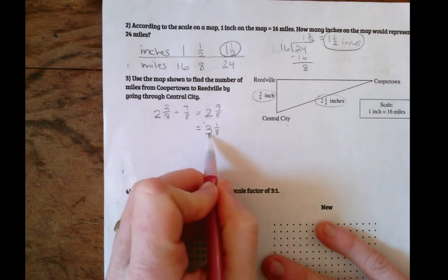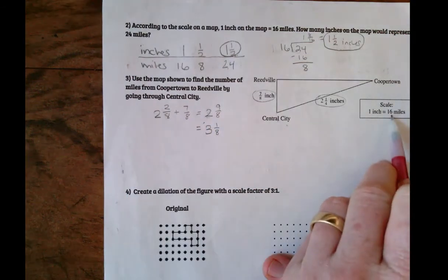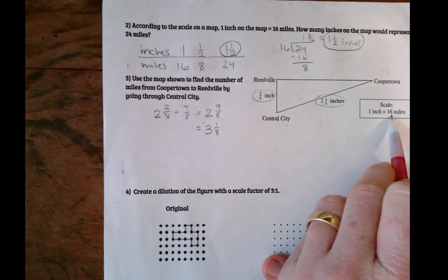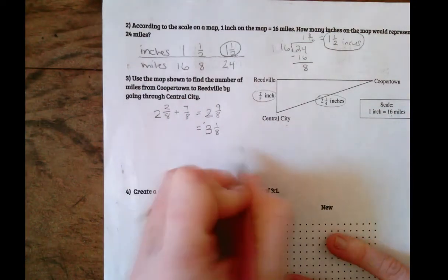So now we need to convert three and an eighth into miles, three and an eighth inches. So we're going to take three and an eighth and multiply it by sixteen.